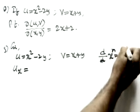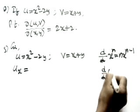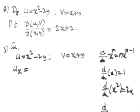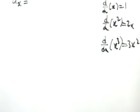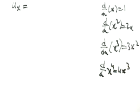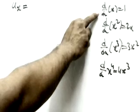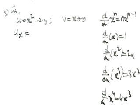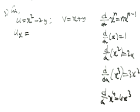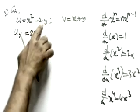We know: d/dx(xⁿ) = n·x^(n-1), so d/dx(x) = 1, d/dx(x²) = 2x, d/dx(x³) = 3x², d/dx(x⁴) = 4x³. Now differentiating partially with respect to x: ∂u/∂x means we differentiate x² while y is constant, giving 2x. There is no x in the -2y term so that gives 0. So u_x = 2x.